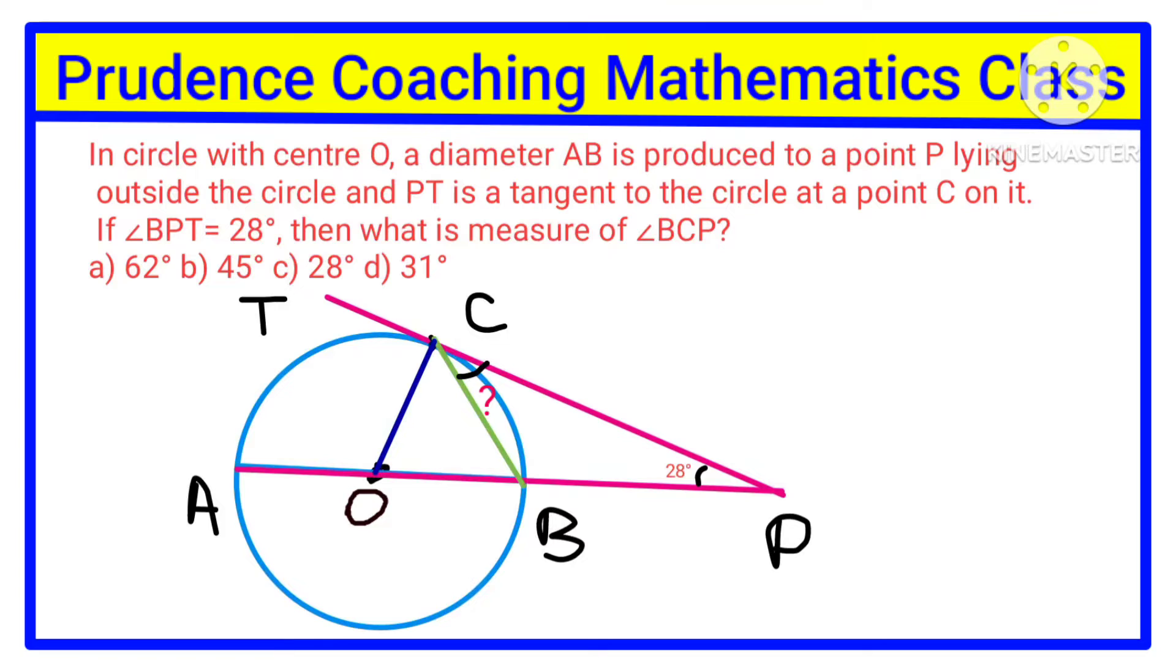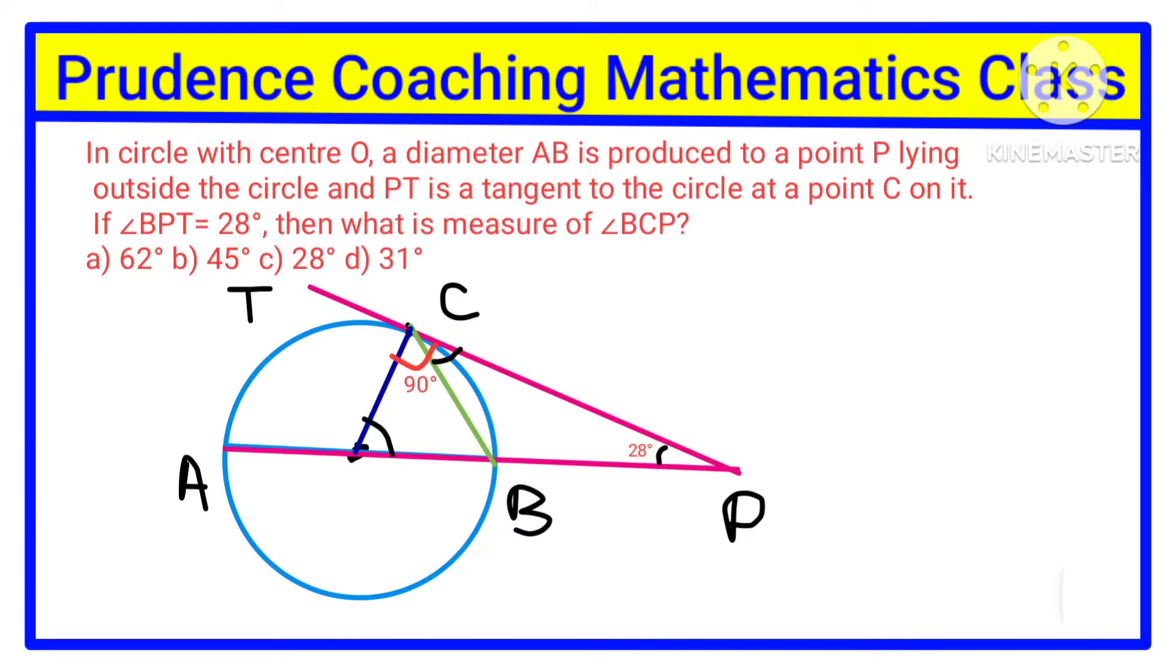Let us draw this line. By drawing radius OC to the point of tangency, this angle is 90 degrees, because when a radius is drawn to a tangent it is always 90 degrees. In triangle OPC, two angles are given: 90 degrees and 28 degrees.